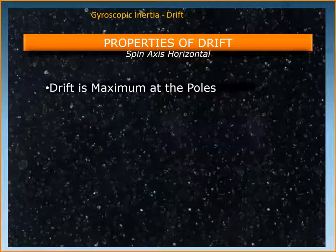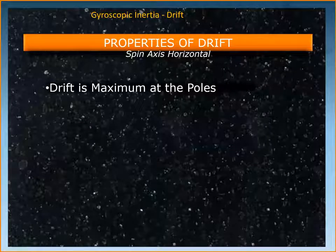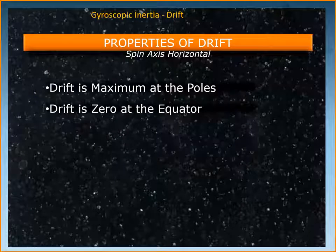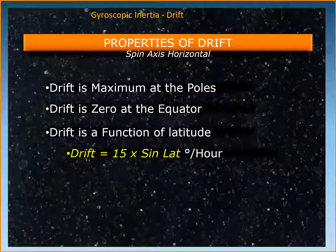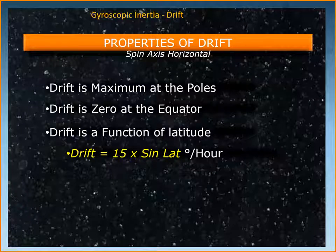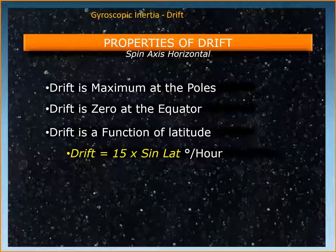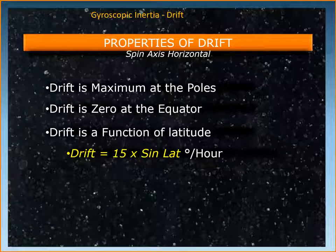Drift — the movement of the gyroscope axis around the horizontal plane — is maximum at the poles and starts to reduce as you come down towards the equator, becoming absolutely zero at the equator. Drift is a function of latitude and equals 15 multiplied by sine of latitude, in degrees per hour. At the pole where latitude is 90°, drift = 15 × sin(90°) = 15 × 1 = 15°/hr, whereas at the equator drift = 15 × sin(0°) = 0.